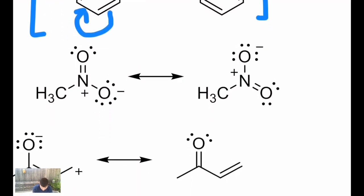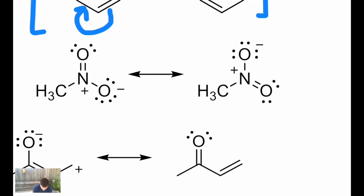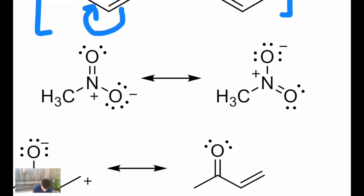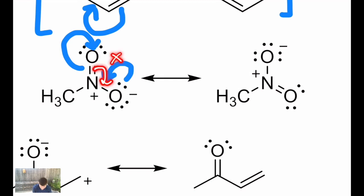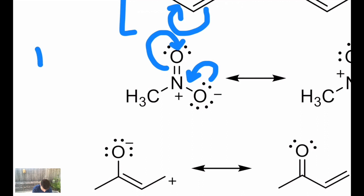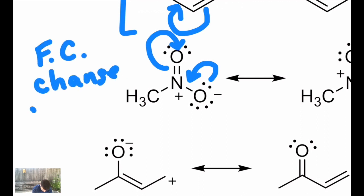Below that, we have the nitromethane molecule. To get the left structure to turn into the right, I have a lone pair on an oxygen in the lower right that becomes a nitrogen-oxygen double bond, and then the nitrogen-oxygen double bond on the top becomes a lone pair on that oxygen. Notice it's not just one arrow with this pi bond becoming that pi bond — that is incorrect because it doesn't show the change in the lone pair count, and those are also moving.